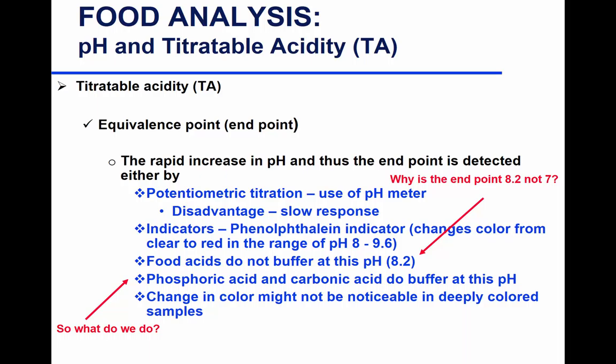You can determine the endpoint either by measuring the pH or by using a phenolphthalein indicator. With a pH meter you can get a slow response — the probe is in the sample, and when you titrate and shake, it takes a while for the reading to stabilize. You might overshoot. So when using a pH meter, be very slow and careful, especially when you are close to the equivalence point.